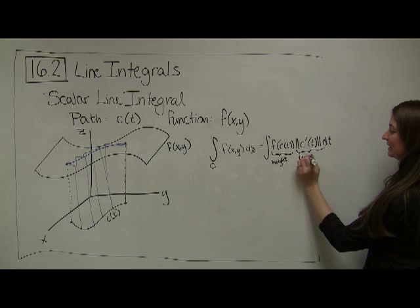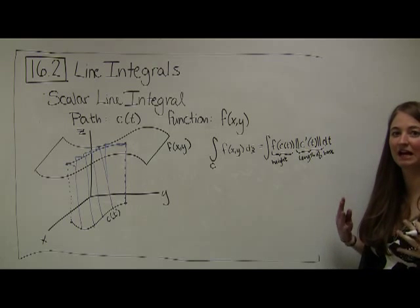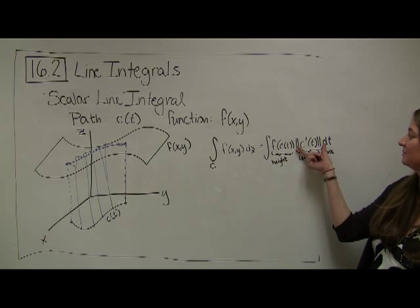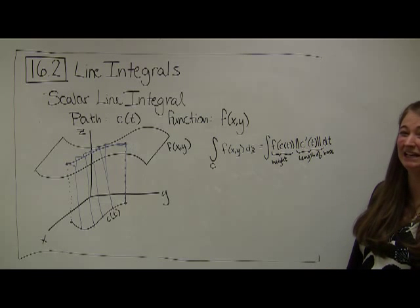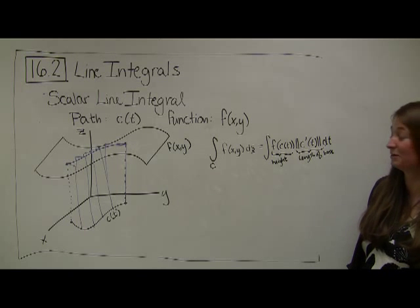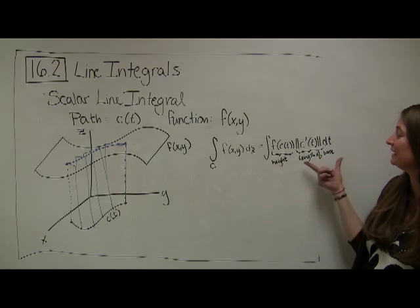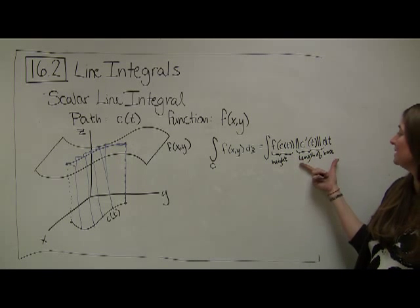You might be having a traumatic flashback right now, because the last time we saw something like the magnitude of c'(t), it was back in chapter 13 — and maybe you didn't really like chapter 13 and want to put that behind you. But really this is a very easy formula to work with, and I think it's very intuitive. Let me take two minutes to explain why.